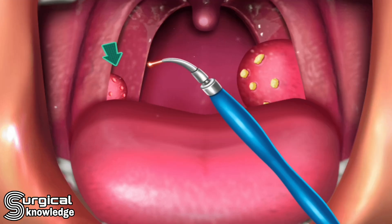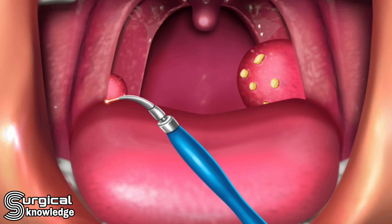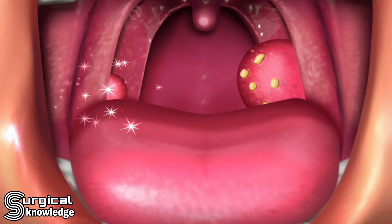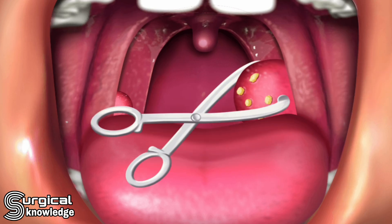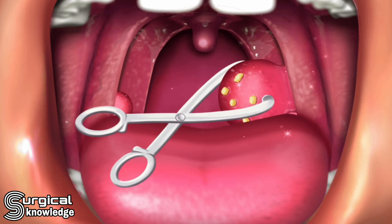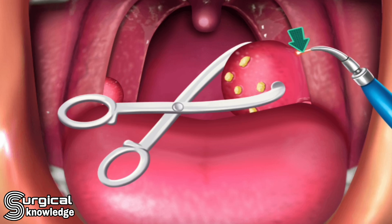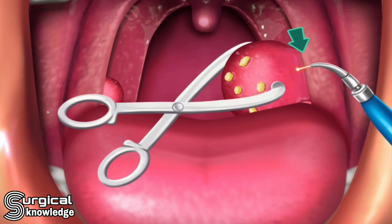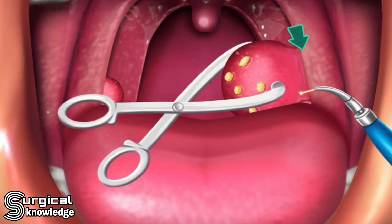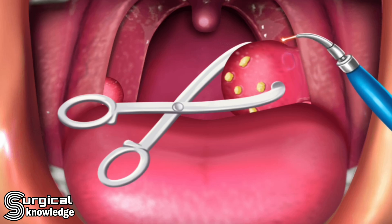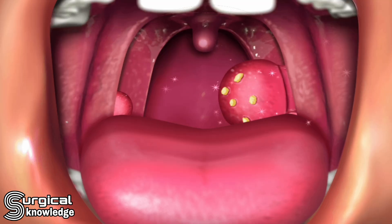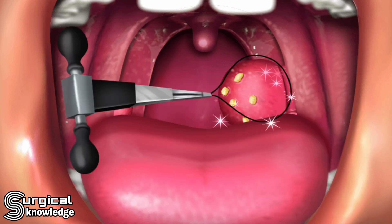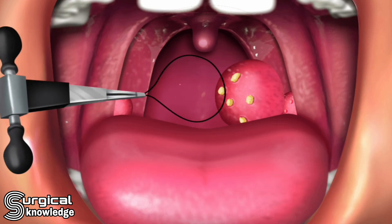Electrocautery or coagulation are common techniques to minimize bleeding during the procedure. In most cases no stitches are needed, as the surgical site typically heals on its own.